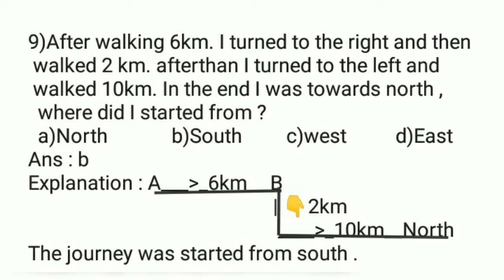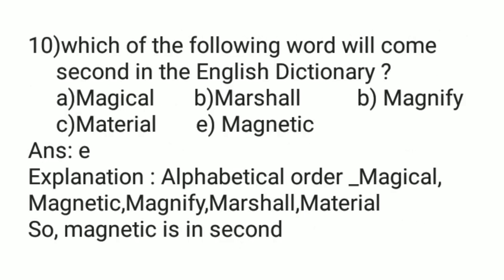Question Number 9: After walking 6 km, I turn to the right and walk 2 km. Then I turn to the left and walk 10 km. In the end I was facing north — where did I start from? The options are north, south, west, east. Starting and moving straight, turning right then left, the starting direction was south. So the answer is south — option B.